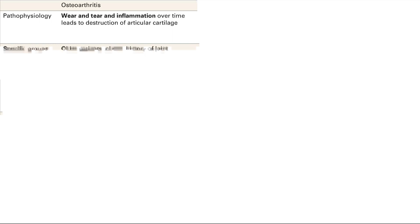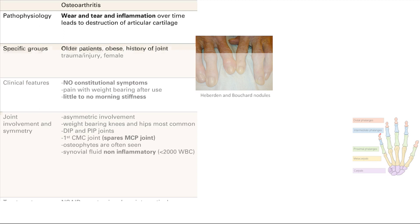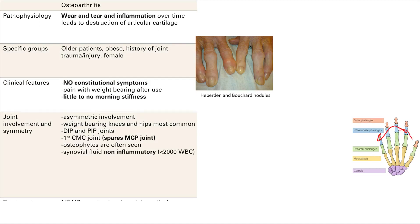Looking at joint involvement and symmetry: osteoarthritis has asymmetric involvement, meaning just one knee, elbow, or hip may be affected. The most common joints affected are weight-bearing ones, especially the knees and hips — again, relating to the pathophysiology. The hands can also be affected. Specific hand joints involved include the DIP (distal interphalangeal), the PIP (proximal interphalangeal), and the first carpometacarpal joint. Note that the MCP joint is spared — I want to contrast that to rheumatoid arthritis.